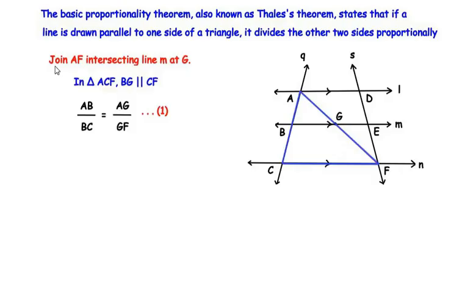We join AF, which intersects line M at point G. In triangle ACF, line BG is parallel to line CF. By the basic proportionality theorem, since BG is parallel to CF, it divides sides AC and AF proportionally. So we get AB over BC equals AG over GF. Let us call this equation 1.